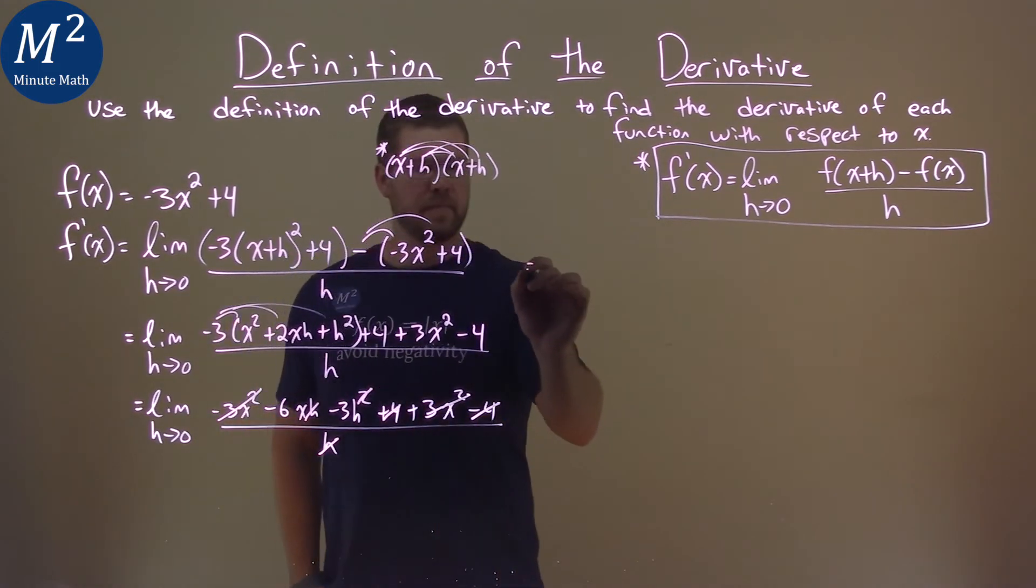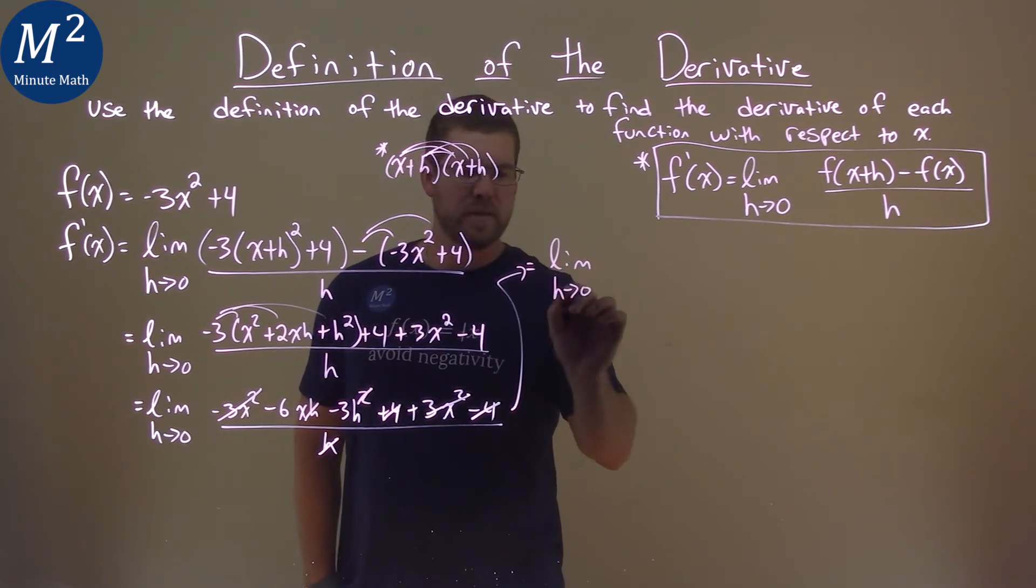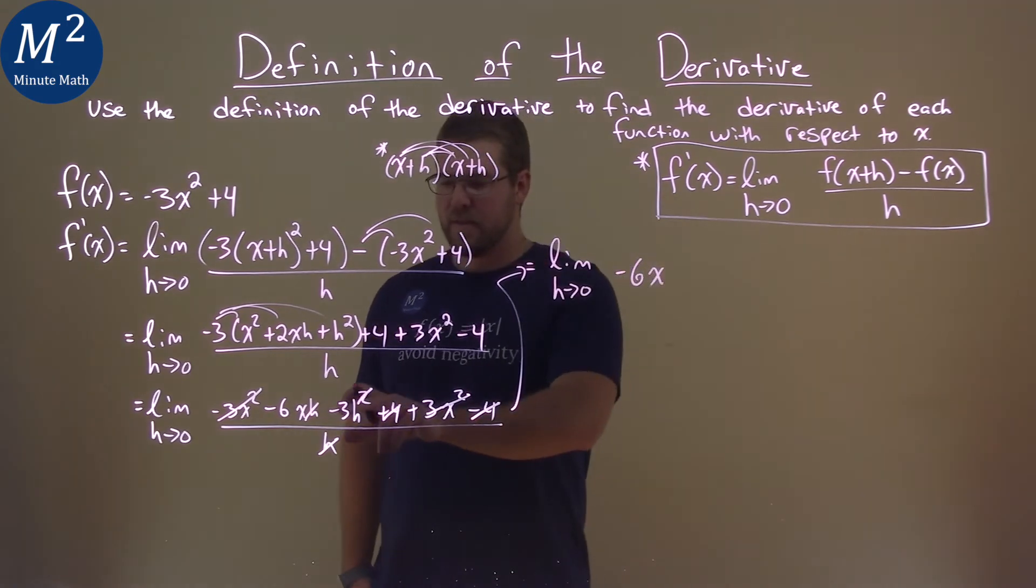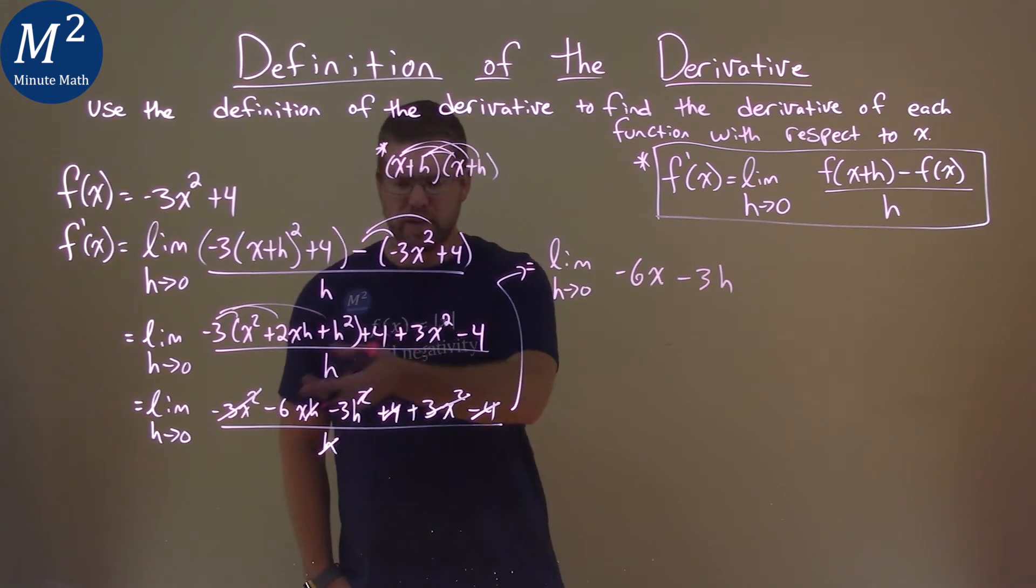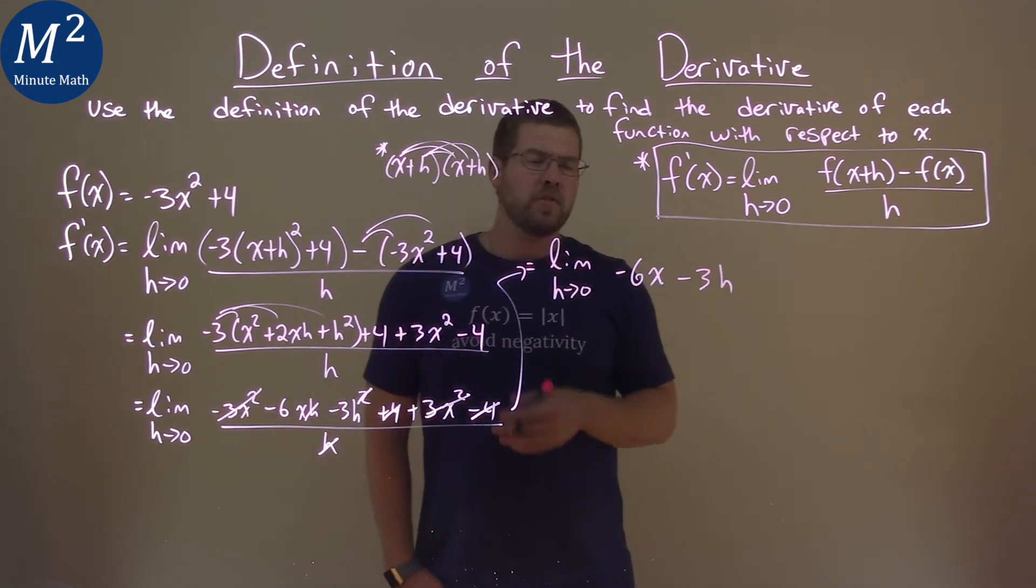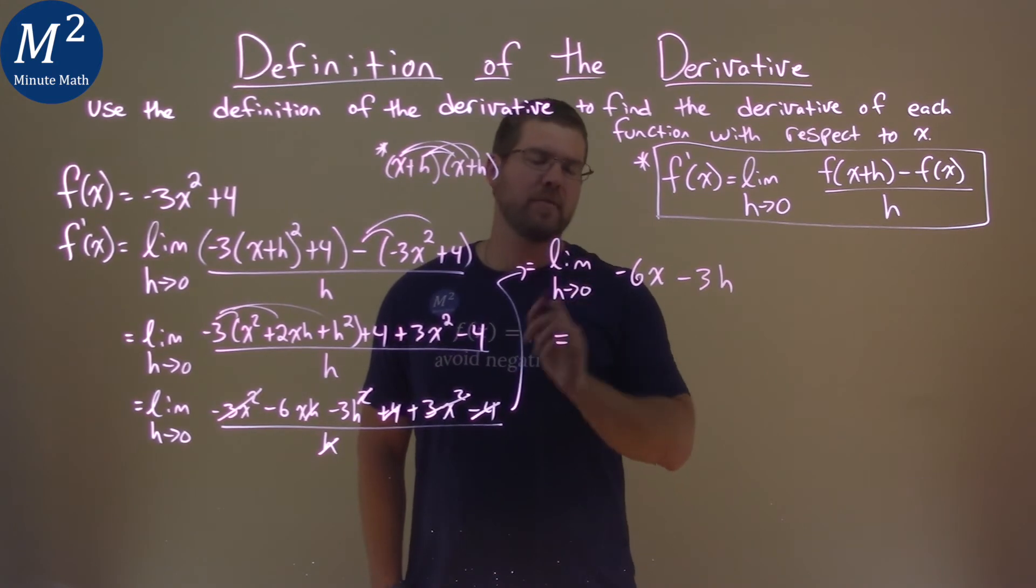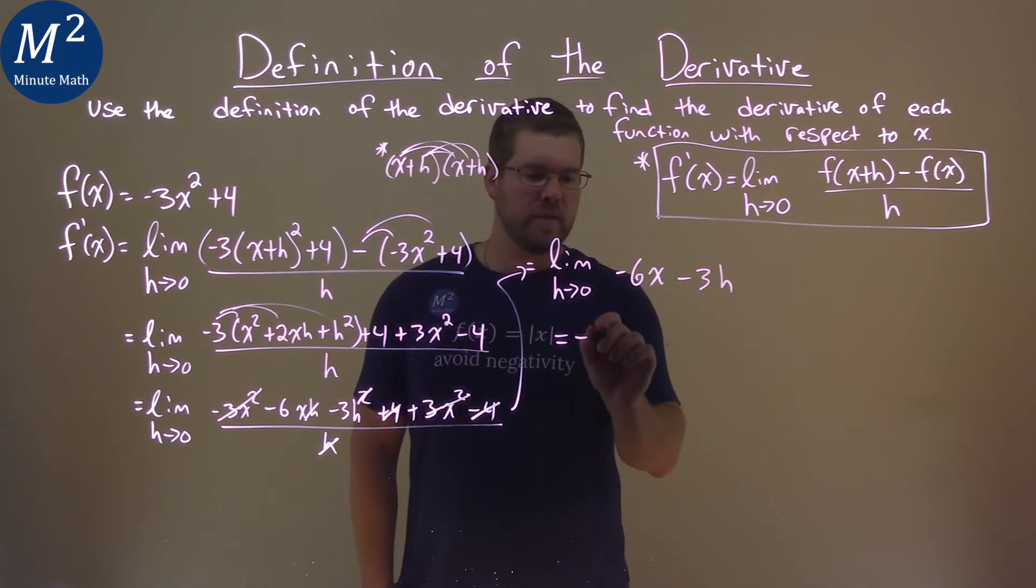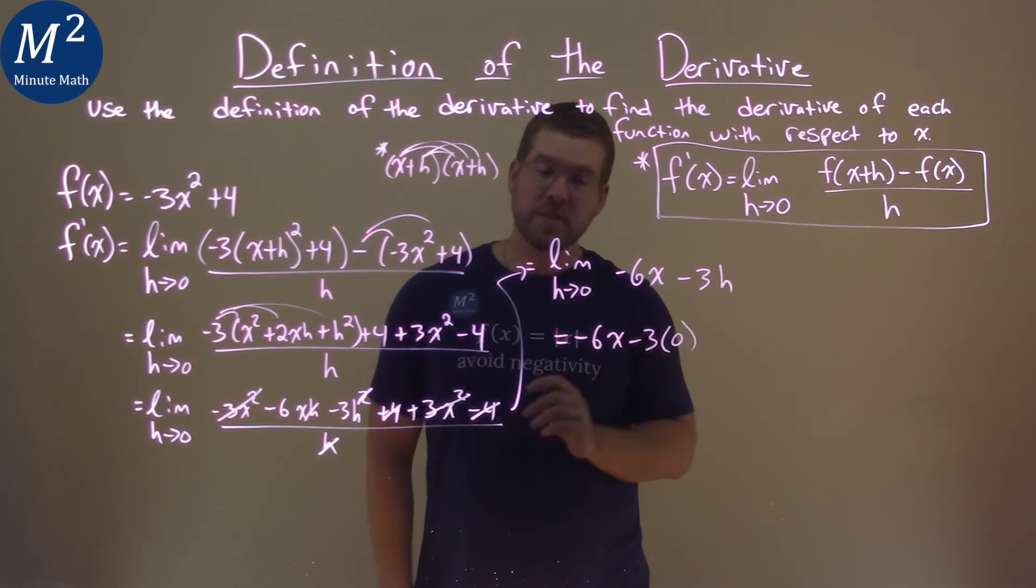So, what do we have left? I'll put it up here so we can see it. We have the limit. Don't forget to keep writing it because we haven't taken the limit yet. We have negative 6x and then minus 3h. And that's it. That's all that's left that's there. So, now we can actually take the limit here. And now we don't have to write the limit anymore. We can take it directly at 0 and we plug 0 in.